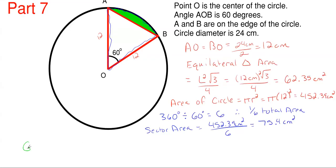My green region, or the area of my green region, is just going to be my sector area which is 75.4 cm squared subtracting off my equilateral area for my equilateral triangle which is 62.35 cm squared. This gives me a remaining area of 13.05 with some rounding there, centimeters squared for my answer.